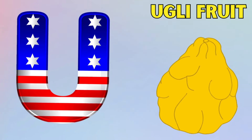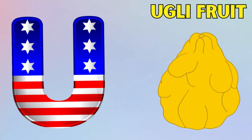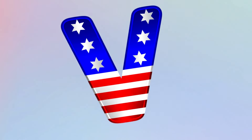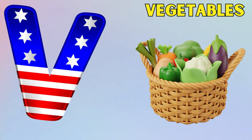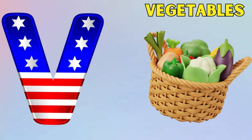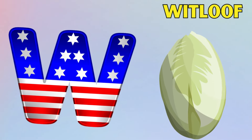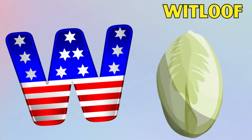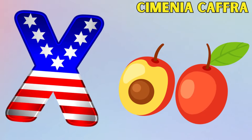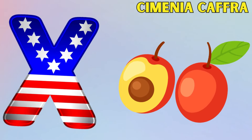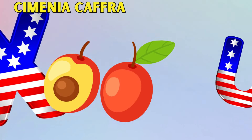U is for ugly fruit, ugly fruit. V is for vegetables, vegetables. W is for whitloaf, whitloaf. X is for zymenia caff, zymenia caff.